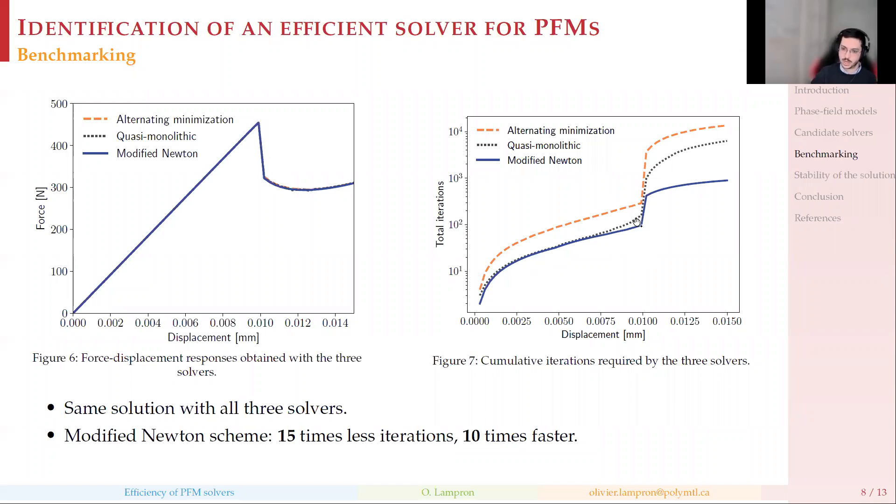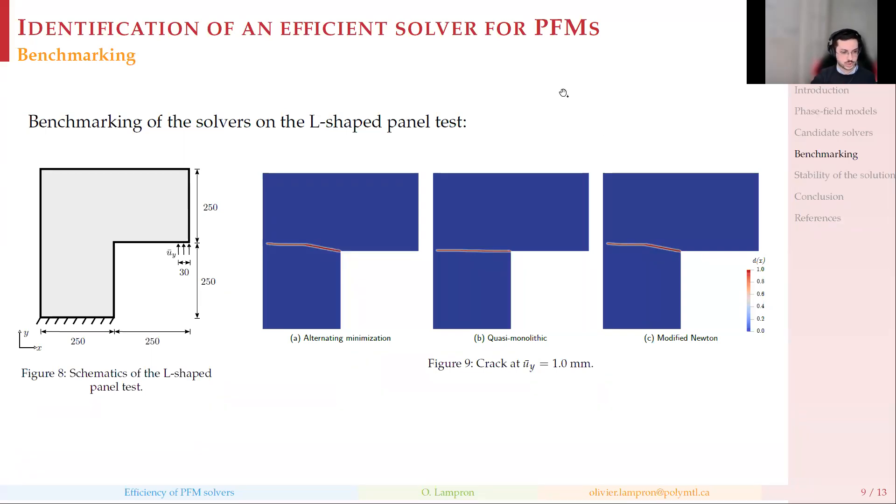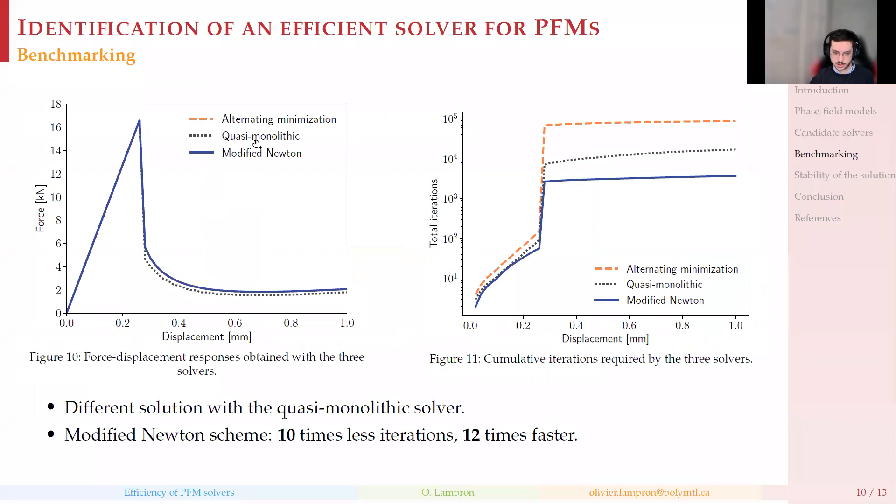In the end, our modified Newton solver was 10 times faster than the standard staggered solver that is used in the literature. If we look at a second benchmark, it's an L-shaped panel with mixed mode propagation. We fix the bottom and pull here. The solutions are identical for the staggered solver and modified Newton solver, but we have a weird solution for the quasi-monolithic scheme, suggesting that maybe it's not so robust. And maybe that's some explanation for why it's not that much popular in the literature. Our modified Newton scheme is up to 12 times faster than the standard scheme.